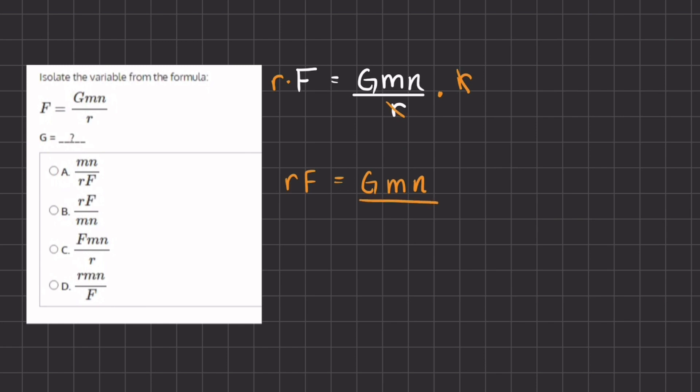Now we want to divide both sides by mn in order to get rid of the mn coefficients of g. So if we do this we have rF divided by mn equals g because these two will cancel out.